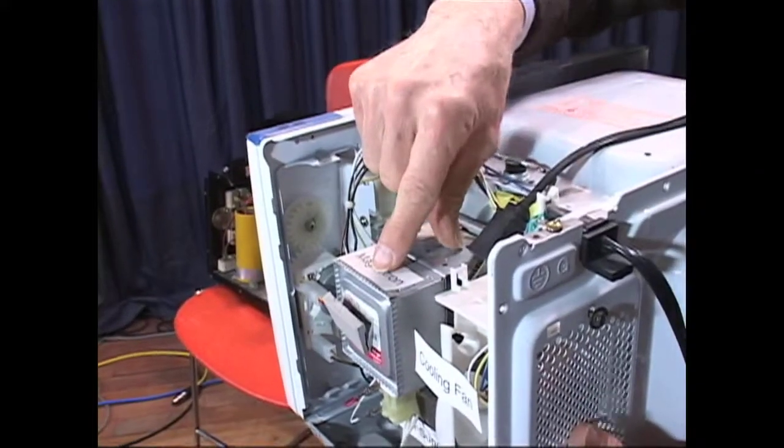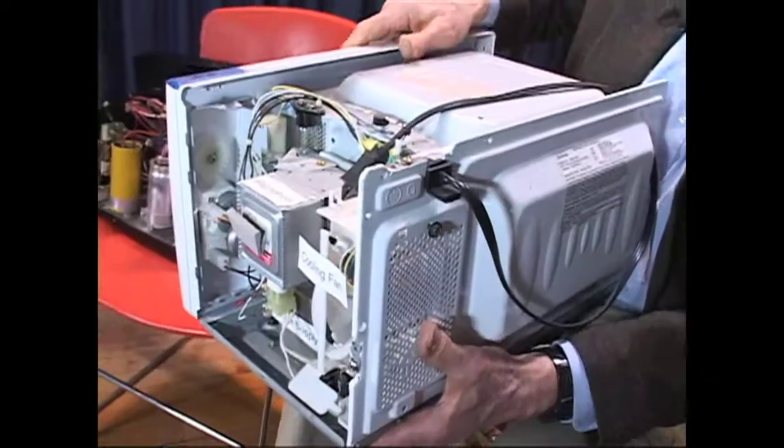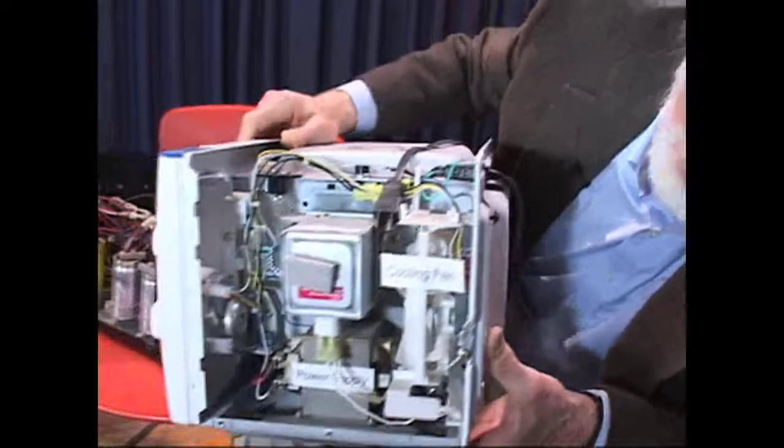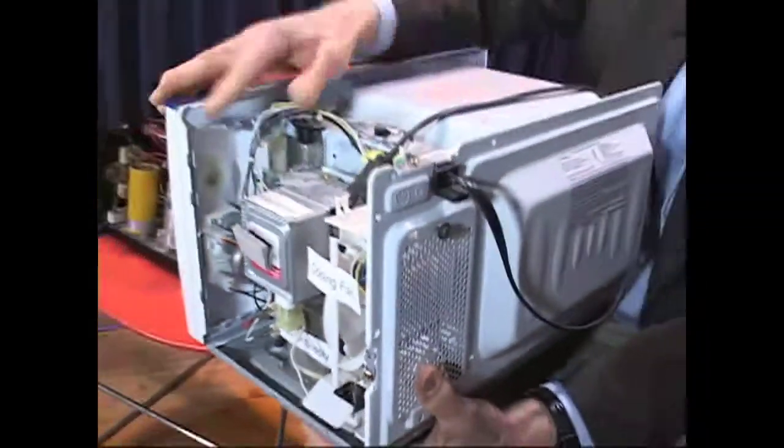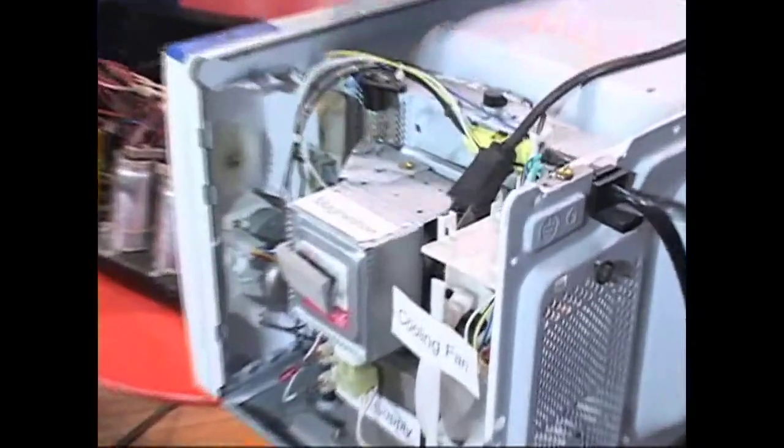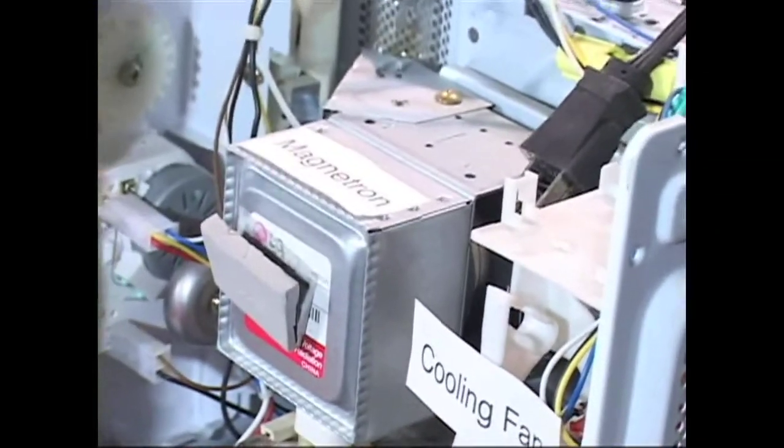It's called a voltage doubler circuit. It takes the high voltage from this transformer down here and doubles it and brings it up to the magnetron where it's turned into the microwave energy.